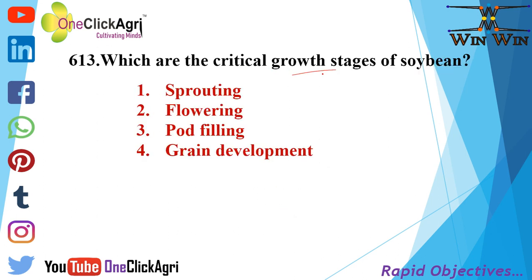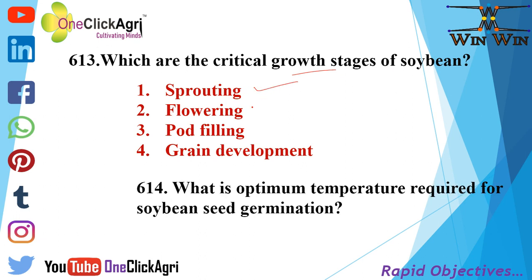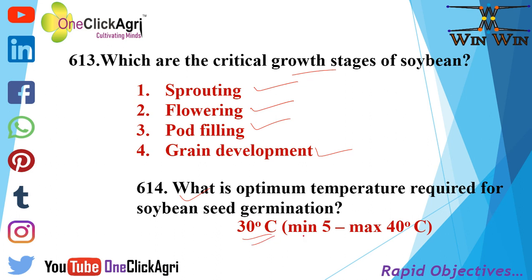The critical stages of soybean are sprouting, flowering, pod filling and grain development. The optimum temperature required for soybean seed germination is 30 degree Celsius, with a minimum of 5 and maximum of 40 degree Celsius.